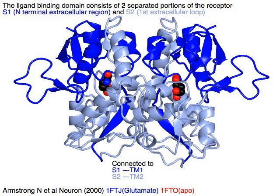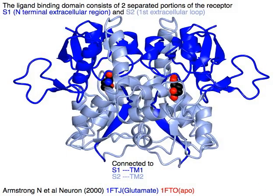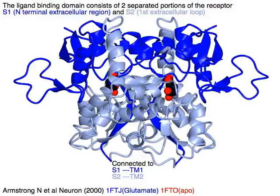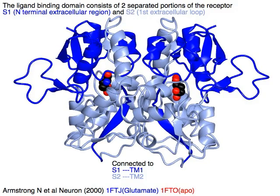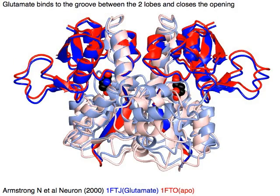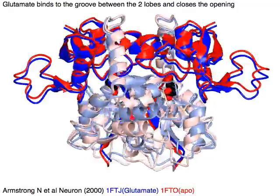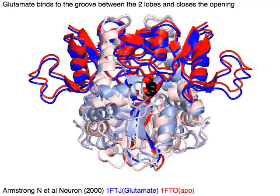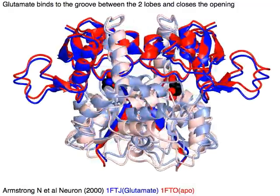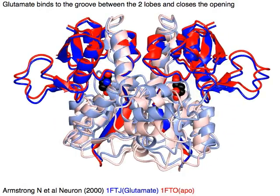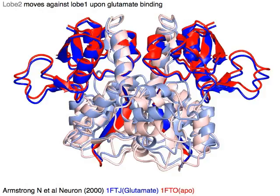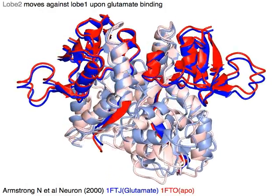The ligand binding domain consists of two separated portions of the receptor: S1 as part of the N-terminal extracellular region in blue, and S2 as the first extracellular loop in light blue. Glutamate binds to a groove between the two lobes and closes the opening between them. Lobe 2 in light colors moves against lobe 1 upon glutamate binding.